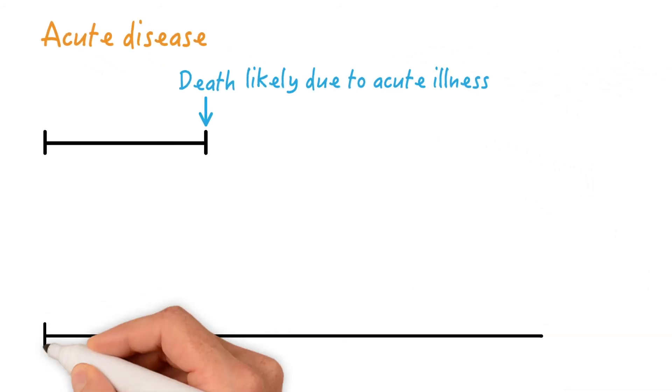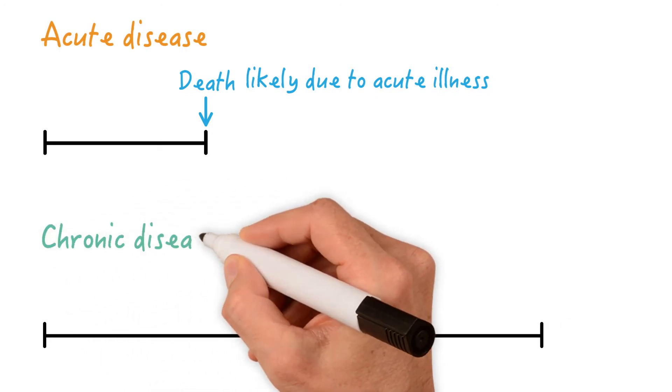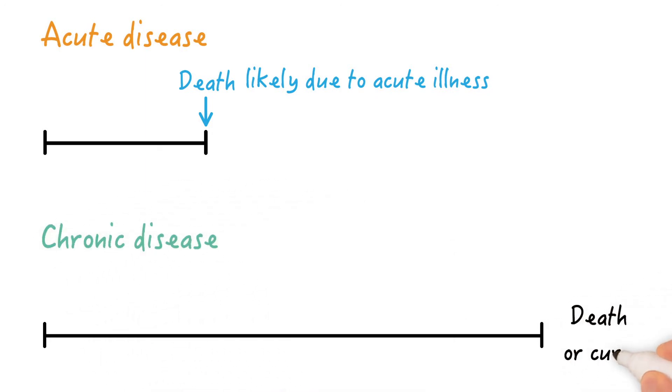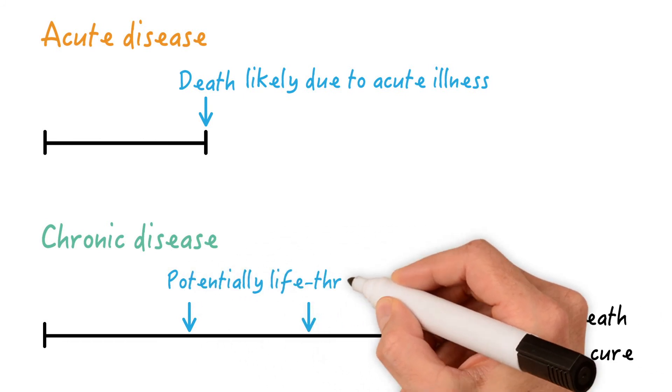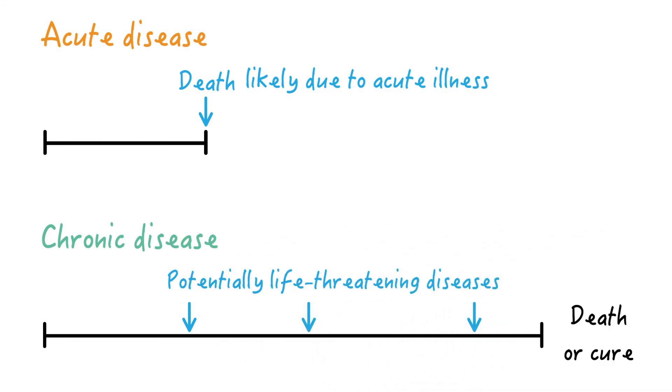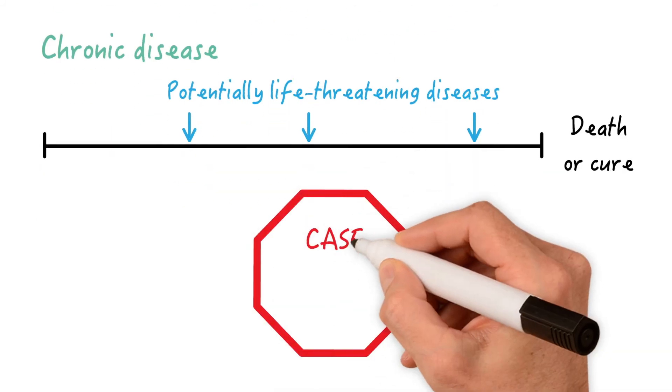Conversely, this is the duration of a chronic disease, which ends in death or cure, let's say. Case fatality rate is less useful here, because the disease can go on for years and decades. Think about it. Throughout the life of a chronically ill person, many potentially life-threatening diseases or accidents can occur. So, if someone with the disease dies, it's quite possible that the cause of death is unrelated to the disease of interest, which makes case fatality rates less useful in this setting.